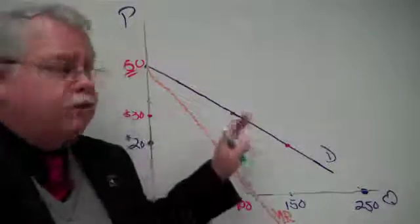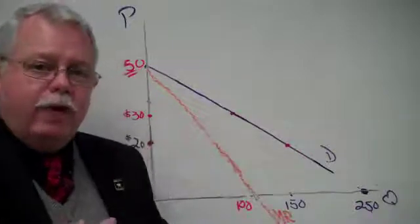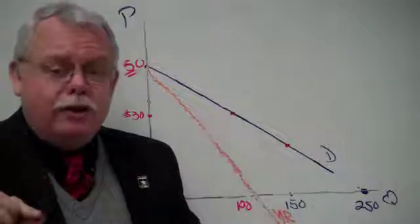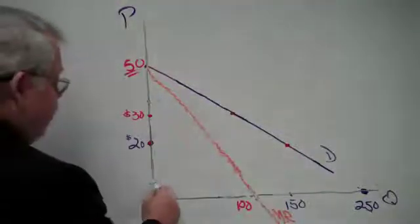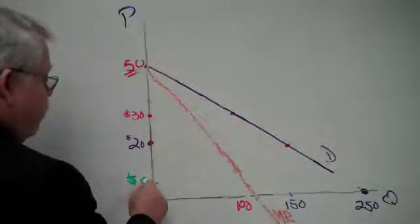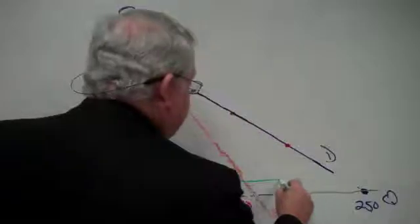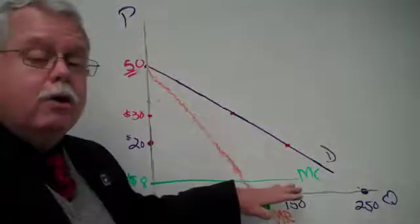Let's make this one a little easy. Let's say that the marginal cost for this company, the cost of producing each additional unit is constant. It is a constant $8 per unit, so that this company's marginal cost curve is a straight line at $8. They have a horizontal marginal cost curve.